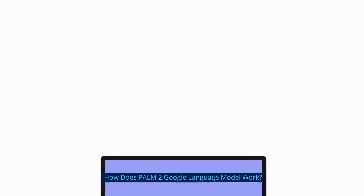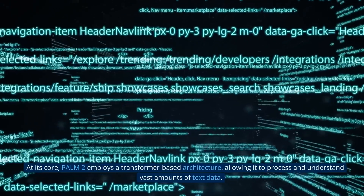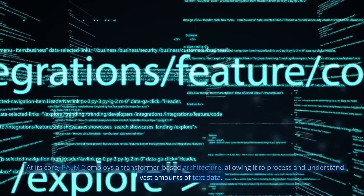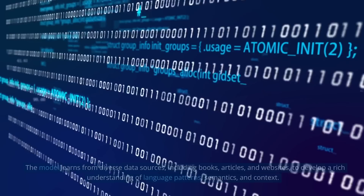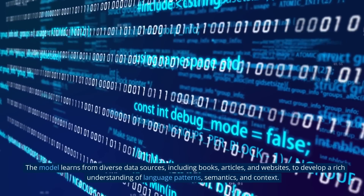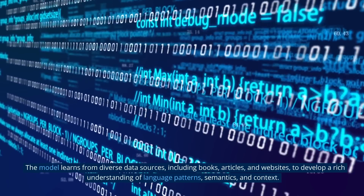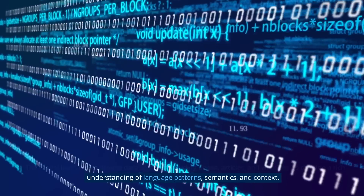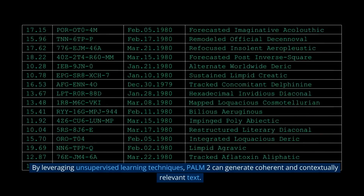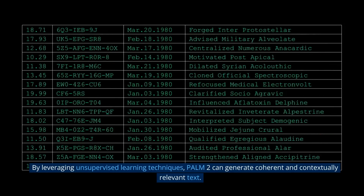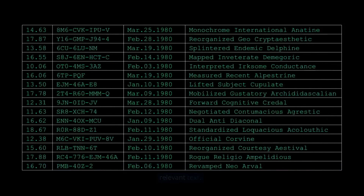At its core, POM2 employs a transformer-based architecture, allowing it to process and understand vast amounts of text data. The model learns from diverse data sources, including books, articles, and websites, to develop a rich understanding of language patterns, semantics, and context. By leveraging unsupervised learning techniques, POM2 can generate coherent and contextually relevant text.